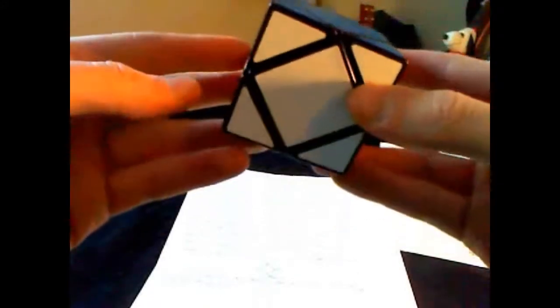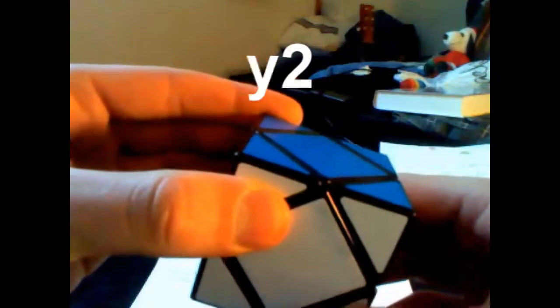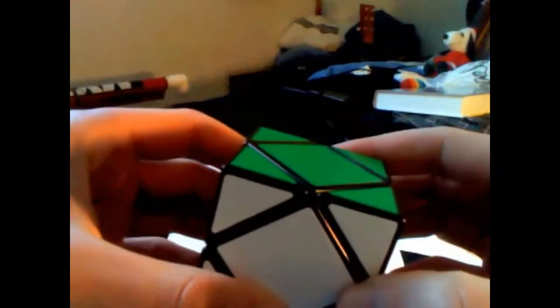If you're not familiar with Y rotations, this is a Y rotation, where the white face is the bottom face, and the blue face is the front face. This is a Y, this is a Y', and this is a Y2. You'll notice that the bottom face remains the bottom face.